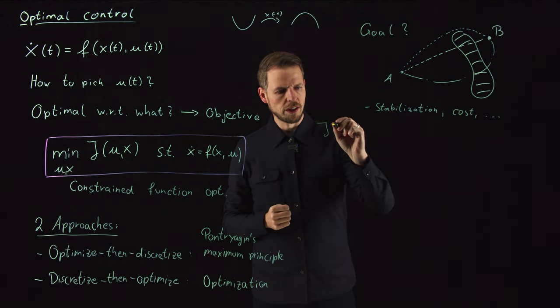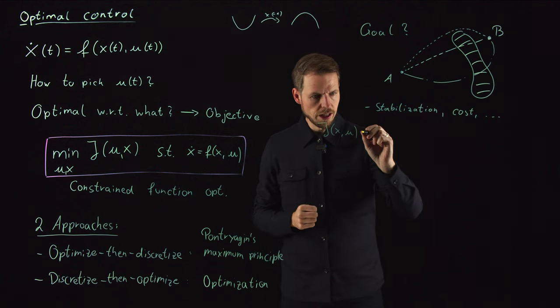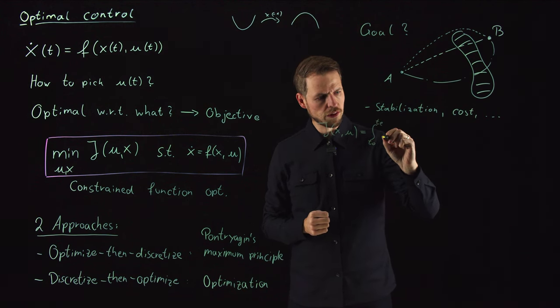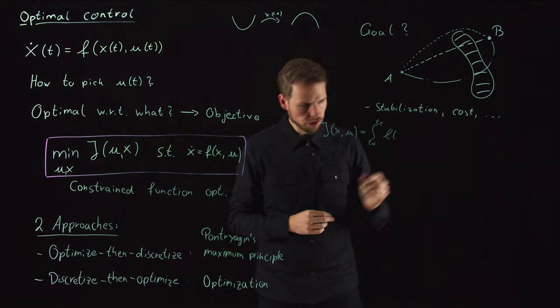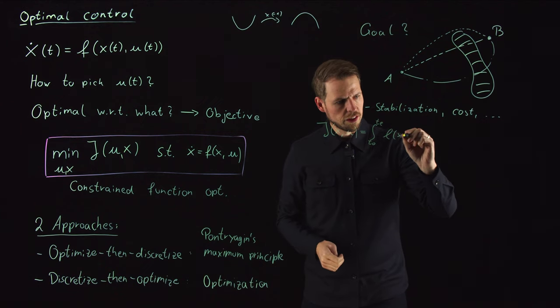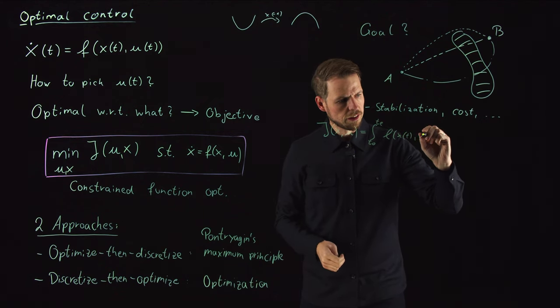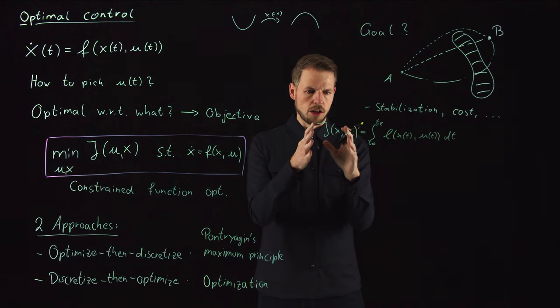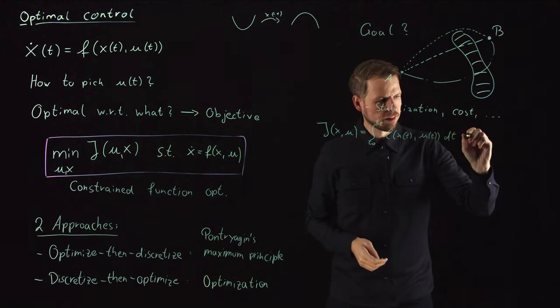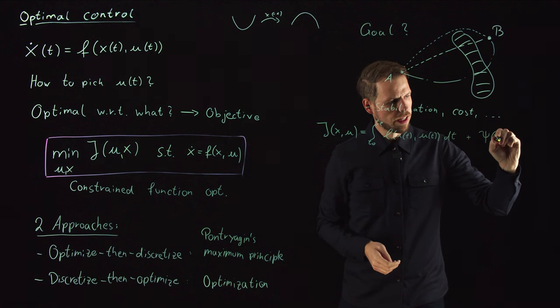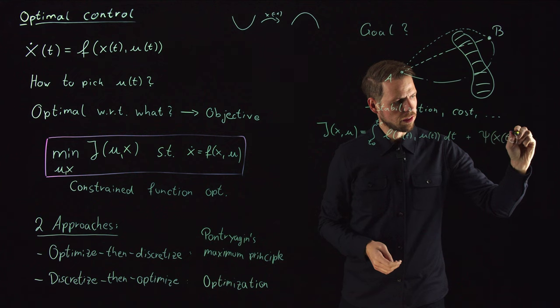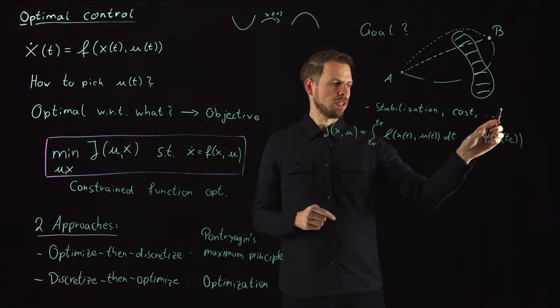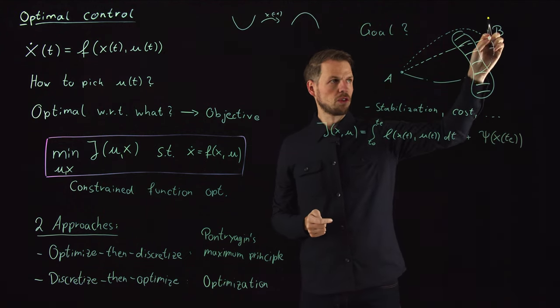What we usually do is formalize this J in a way that accounts for these types of objectives. We say that J of X and U is an integral from the initial condition to the final condition of this tracking-type function—a lowercase L function, also called state cost—that takes the state and input at time U and integrates over time. This is an objective over the entire trajectory. Plus, in many situations you have an additional term that penalizes the final state. You could leave out one of these—maybe the objective is to minimize the distance of the final state to B.